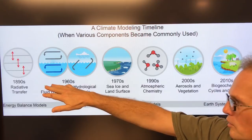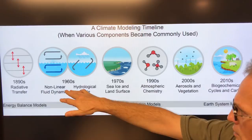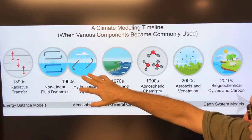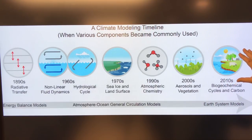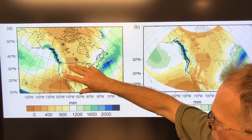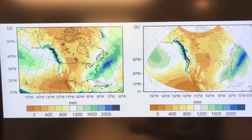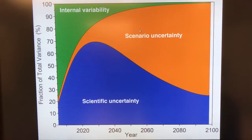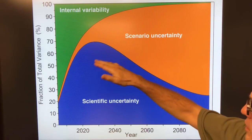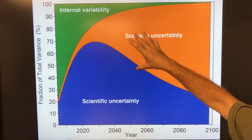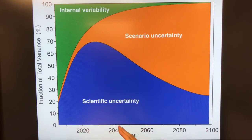Some of the original climate models weren't done with computers — you need radiative transfer, then air and ocean movements and their interactions, the hydrological cycle, sea ice and land surface, atmospheric chemistry, aerosols, vegetation, and biogeochemical cycles, giving you total Earth system models. Models are getting more and more sophisticated. With smaller grid sizes you get more detailed results, and over time as we learn more, scientific uncertainty can be reduced. There are different sources of uncertainty: emission scenarios, model uncertainty, and internal variability — their relative contributions vary over time.